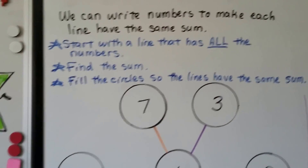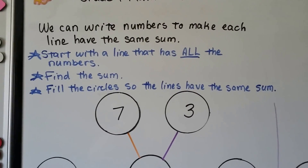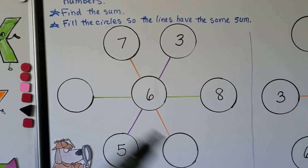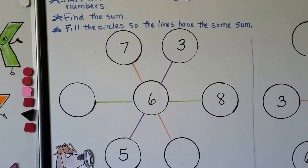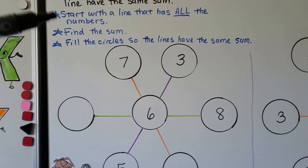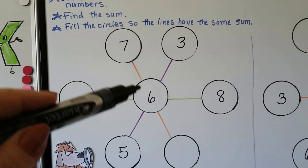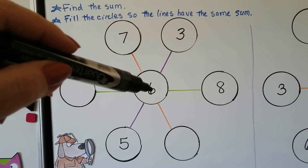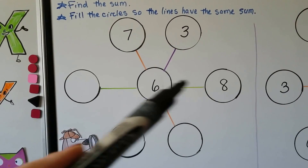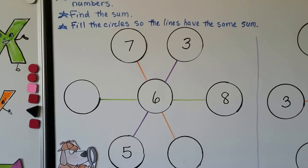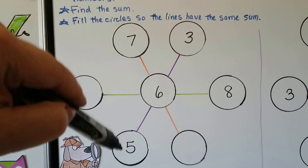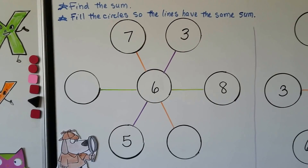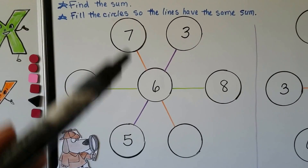This is a little bit different. We can write numbers to make each line have the same sum. Here we have a puzzle with numbers inside circles, but some of them have numbers missing. We start with a line that has all the numbers — here's a line with 7, 6, and a blank; a line with 3, 6, and 5; and a line with 8, 6, and an unknown number. We find the line that has all the numbers — that would be the purple one — and find the sum so the other lines can match it.